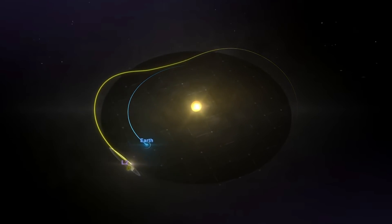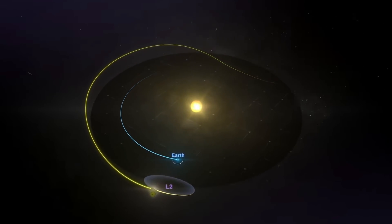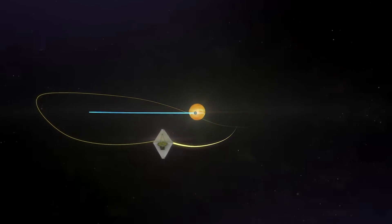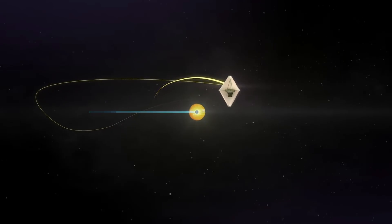Where that telescope will be in orbit around the sun, keeping it aligned with the Earth, which will help the stability of the conditions of the rocket.